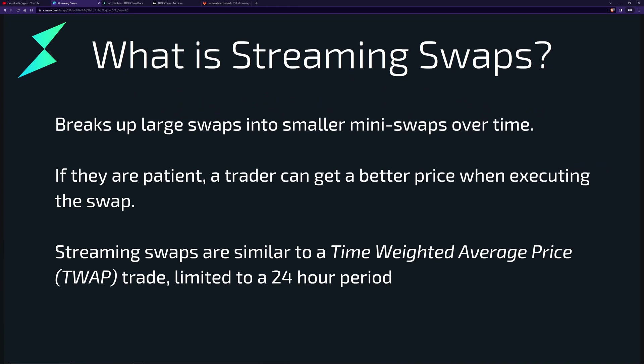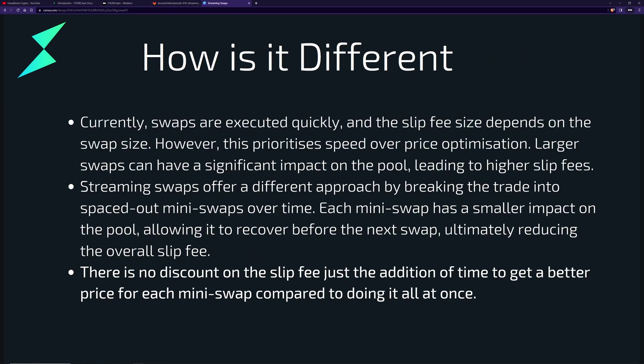So what is streaming swaps? Streaming swaps breaks up a large swap into smaller mini swaps over a period of time. If a trader is patient, they can get a better price when executing a swap. Streaming swaps is similar to a time-weighted average price trade but limited to 24 hours. Currently, swaps are executed as quickly as possible — within the same block — and the slip fee depends on the size of the swap, prioritizing speed over price optimization. Larger swaps have a significant impact on the pool, moving it out of balance and leading to higher slip fees.